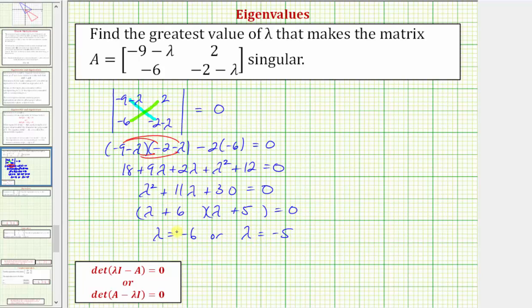So both of these values would make the determinant equal to zero. But this question only asks for the greatest value of lambda. And because negative five is to the right of negative six, negative five is the greatest value of lambda that makes the given matrix singular. So our answer here is lambda equals negative five.